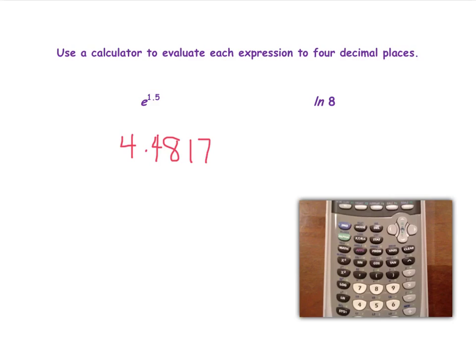Our next example is a natural log example: the natural log of 8. On your calculator, you would hit the ln button for natural log, enter 8, and then press enter. When you do, you would get 2.0794.